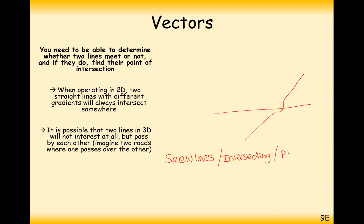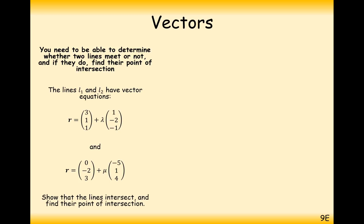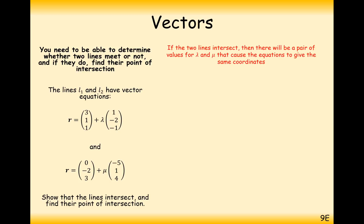The quick way of telling if a line is parallel is that it has the same direction vector, or a scalar multiple of the same direction vector. Now let's look at this question — we have two equations of lines, and we need to show that the lines intersect and find the point at which they intersect.